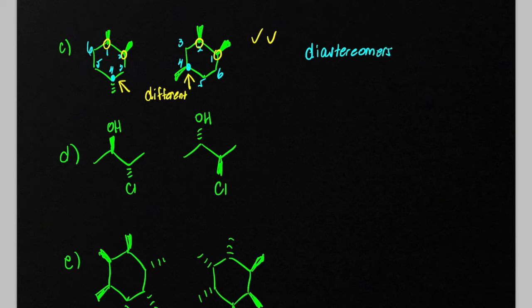This next molecule here, we have a wedge changing to a dash and a dash changing to a wedge. So everything inverts, we would classify these two as enantiomers.